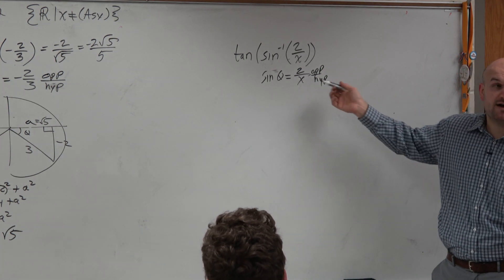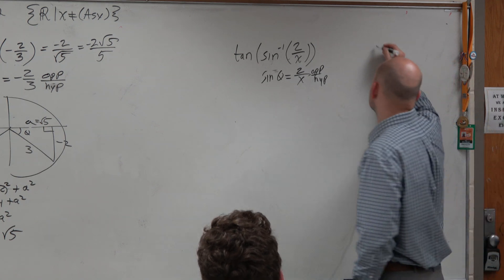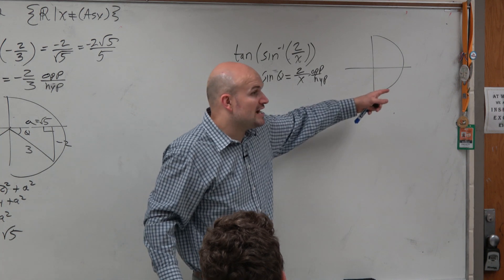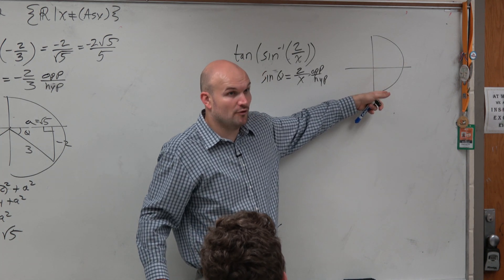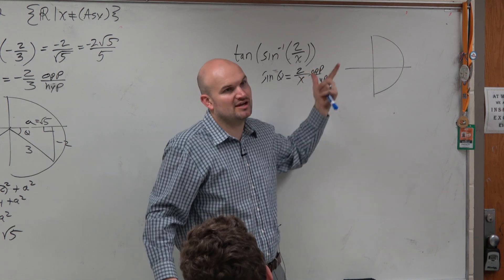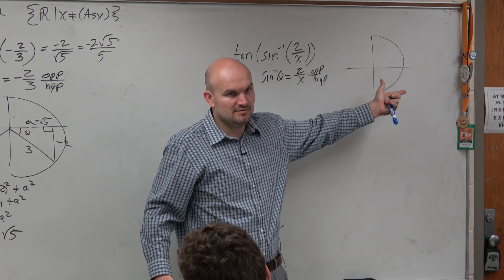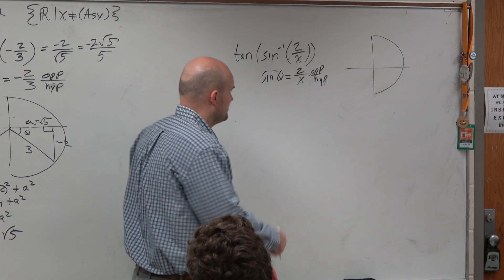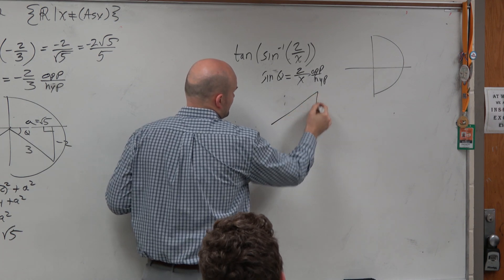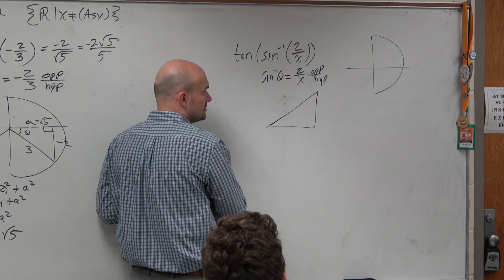So now again, everything's positive. If we look at our restrictions on sine inverse, we only got two options, guys. Your triangle is either in the first or the fourth quadrant. Obviously, everything's positive, or the opposite side's positive. So therefore, we know it's in the first quadrant. So you don't really need to write the quadrant in there if you don't want to. But we know it's going to look like that.